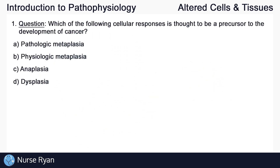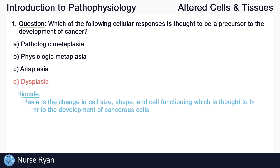Starting off with question number 1: which of the following cellular responses is thought to be a precursor to the development of cancer? The answer here is D — dysplasia. Dysplasia is the change in cell size, shape, and cell function, which is thought to be a precursor to the development of cancerous cells.